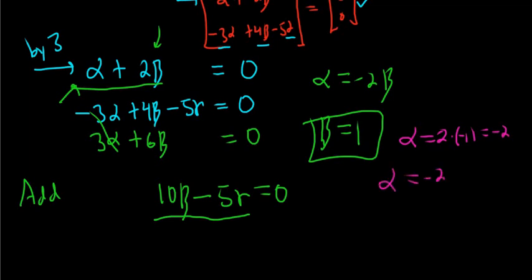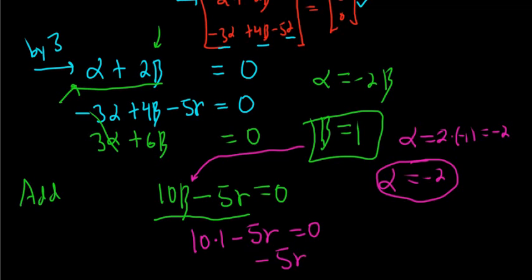So again, solve this one for alpha. Pick beta equal to 1. If beta is 1, then alpha is 2 times negative 1. So alpha is negative 2. So now we have alpha equal negative 2. And beta is 1, so we can plug it in here to find gamma. So now we have 10 times 1 minus 5 gamma. So that ended up working out okay. So negative 5 gamma equals negative 10. Dividing by negative 5 gives us gamma equals 2.